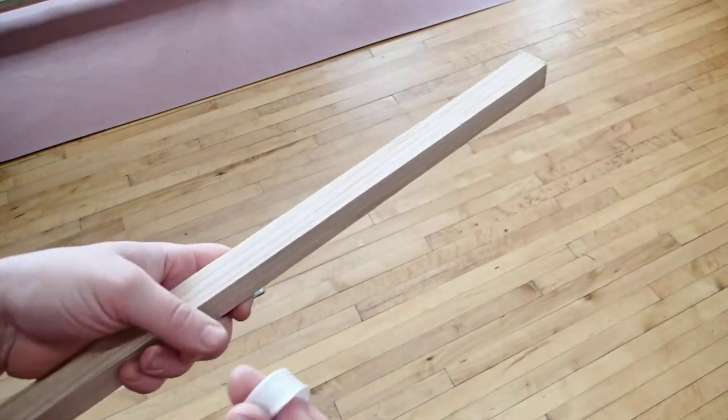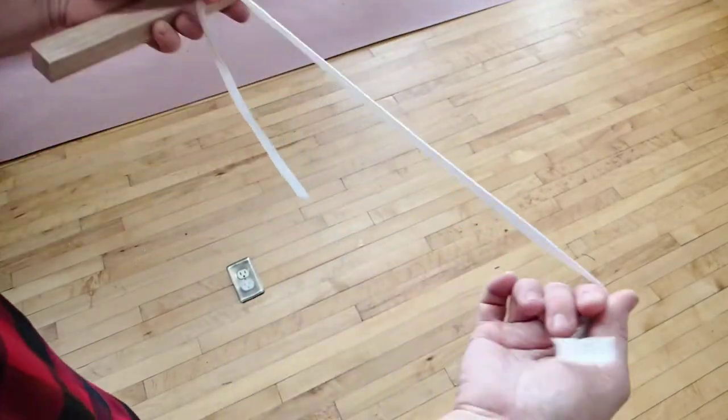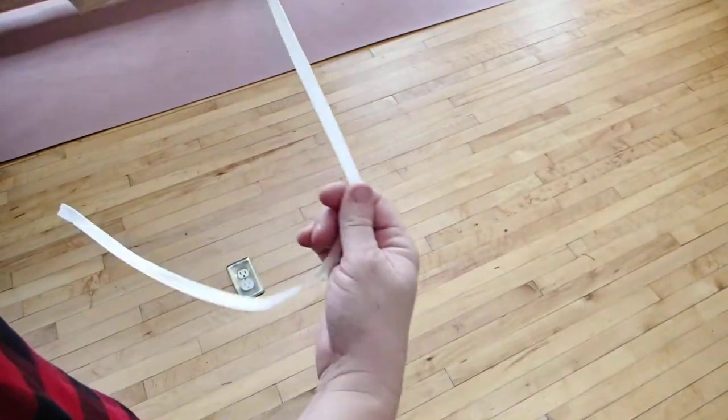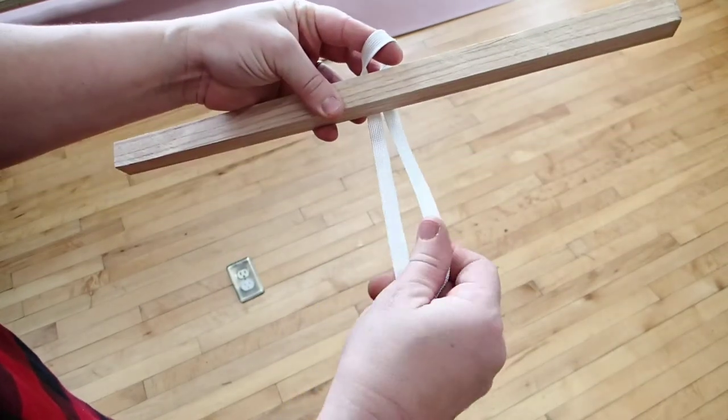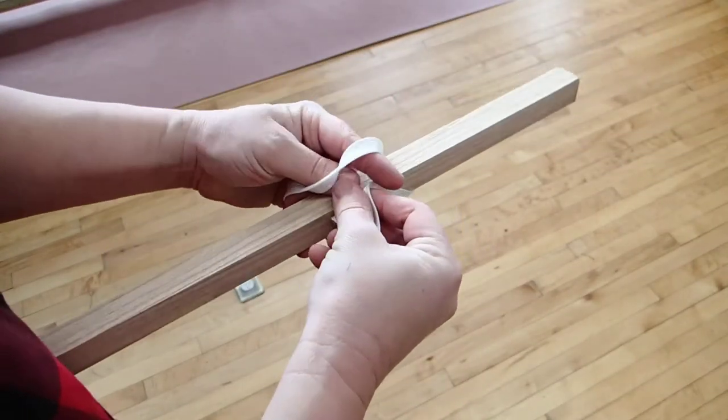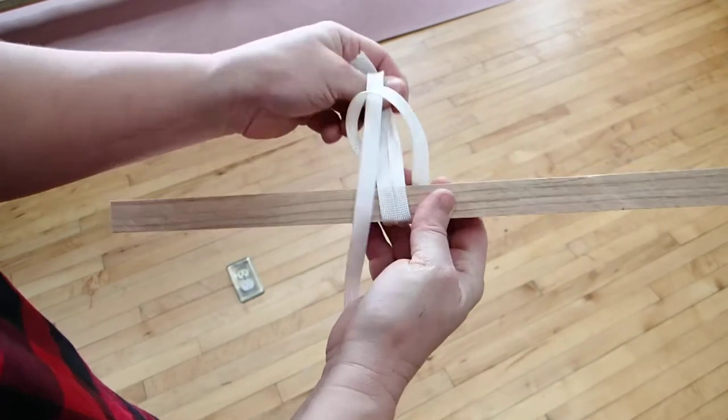So a lark's head is very simple in concept. If you were working with a short piece of string, all you would be doing is taking this loop and wrapping it around the frame and then putting your two loose ends through the loop like that.